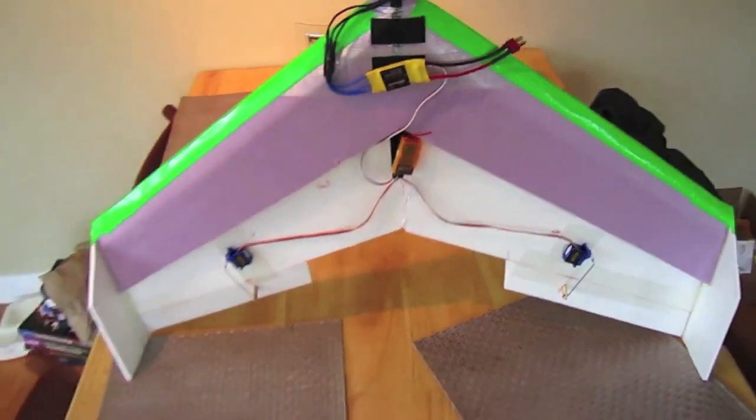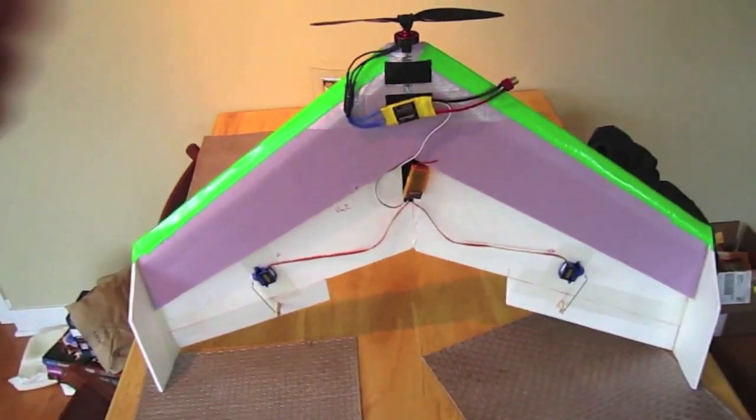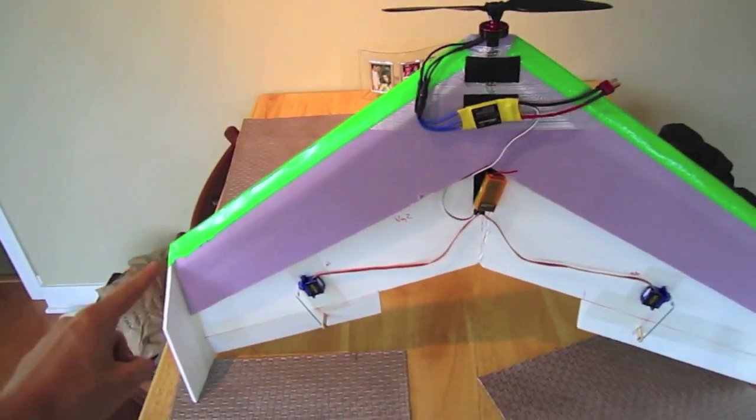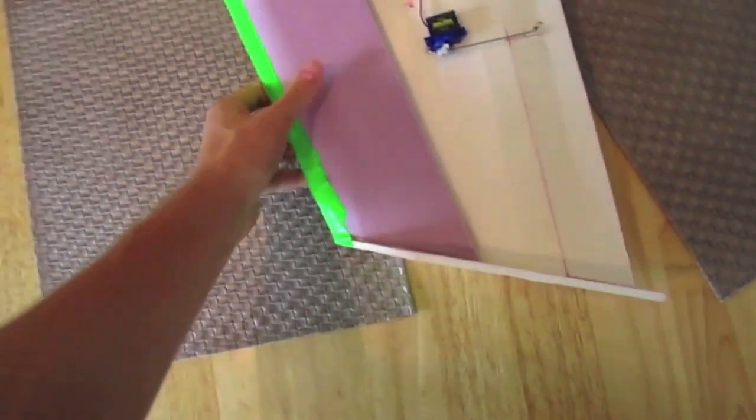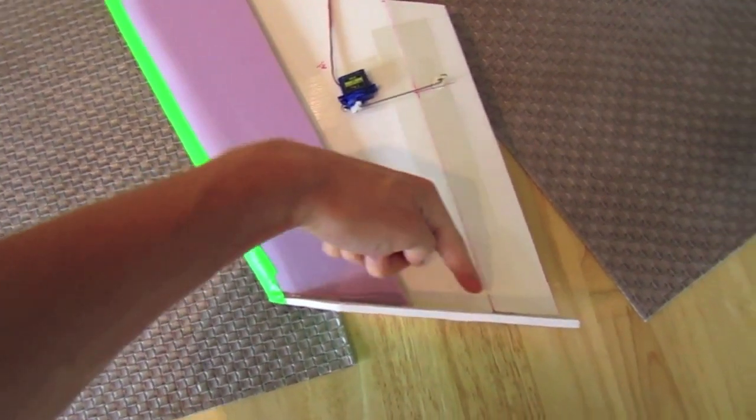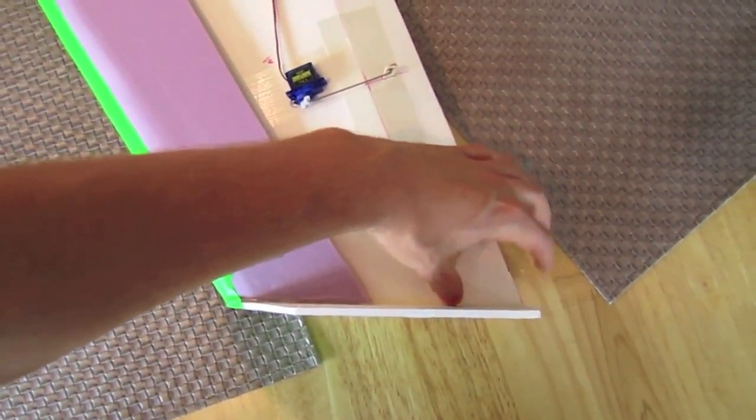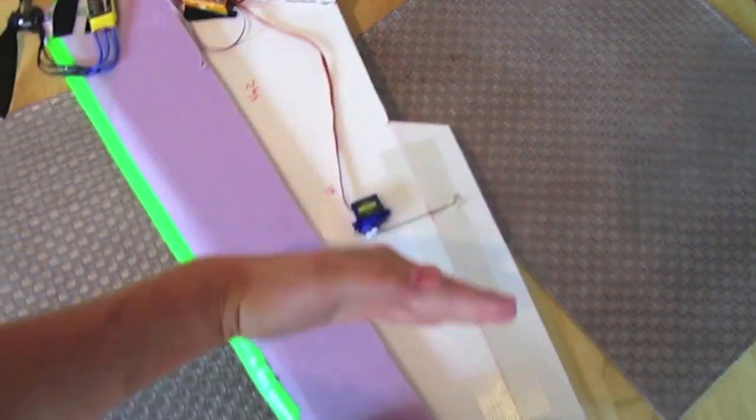It has a 30 inch wingspan, the root cord from here to here is 11.5 inches, and a 9 inch tip cord. Now that 9 inch tip cord includes 7 inches of body from here to here, and then 2 inches of Elevon from here to here. And these Elevons are 10 inches wide.